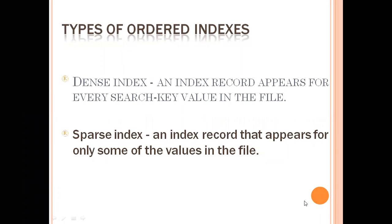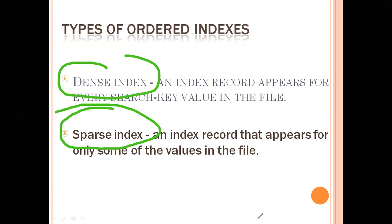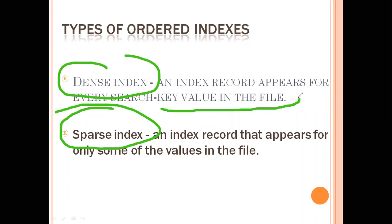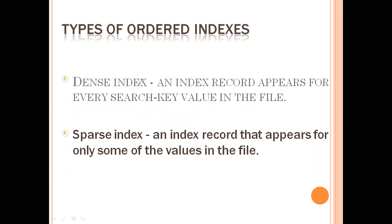Two more things you need to know: dense index and sparse index. Dense index means an index record appears for every search key value in the file — for every record in the file, there will be an index record. That is a dense index. But if index records are kept only for some records — not for all — then that is called a sparse index. A sparse index record appears only for some values in the file.